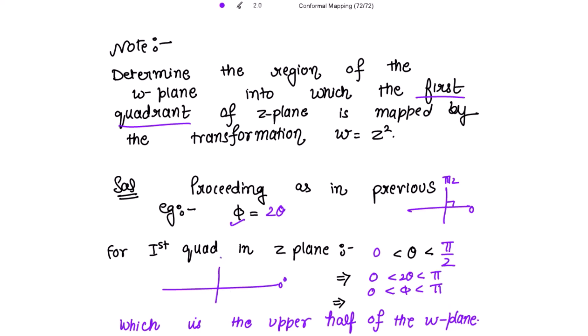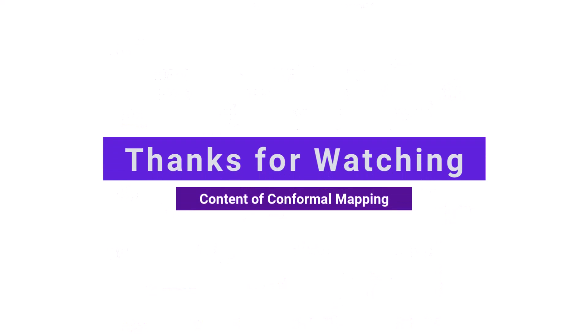So φ ranges from 0 to π — that is, from 0° through π/2 to π. This means the first quadrant of the z-plane maps to the upper half of the w-plane. Thank you, see you next time.